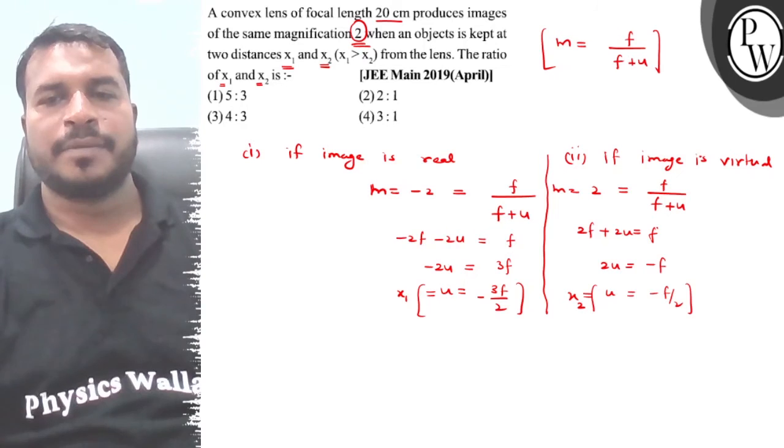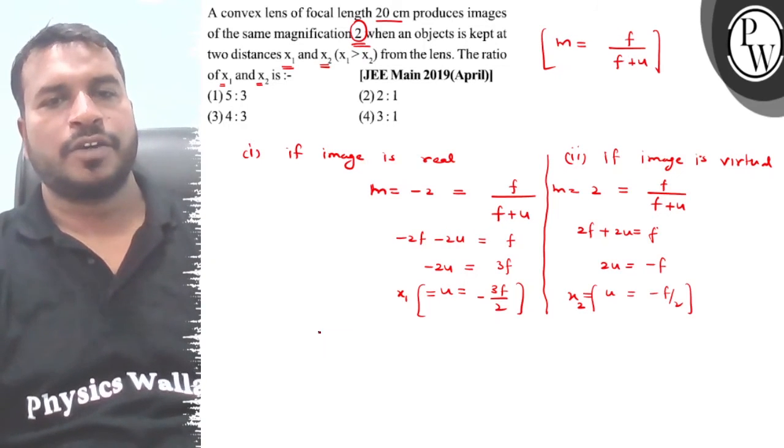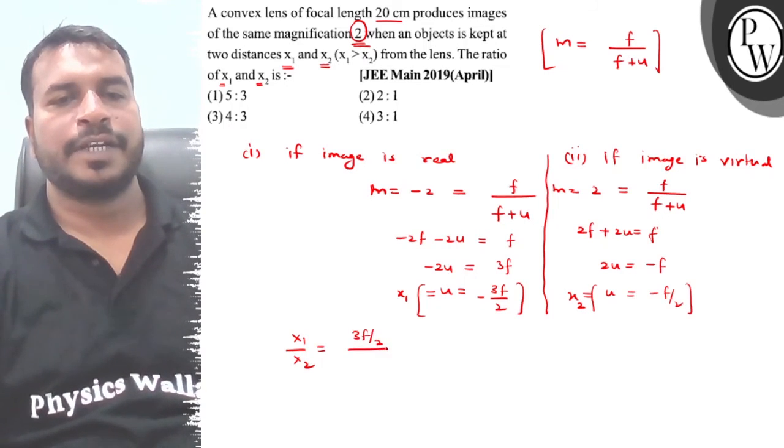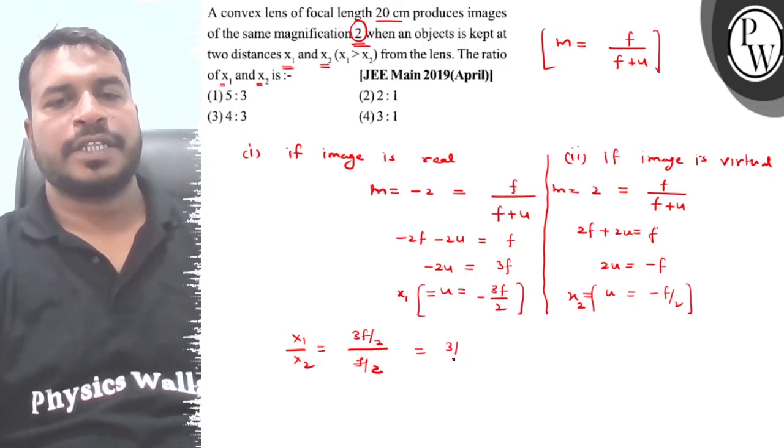So both cases we have seen here, but f by 2 is 3f by 2, so obviously, then the ratio of x1 by x2. So x1 by x2, if x1 value is 3f by 2, and this value is f by 2, so if we look at the ratio, that is 3 by 1. Then our answer is 3 ratio 1.